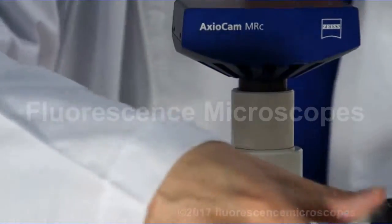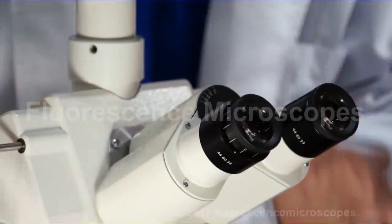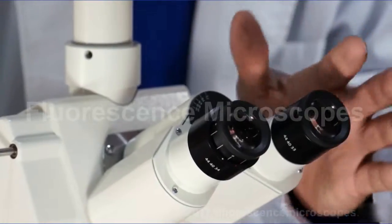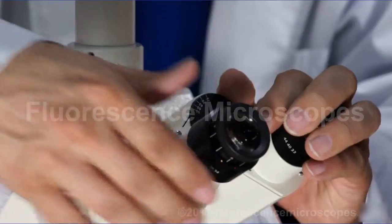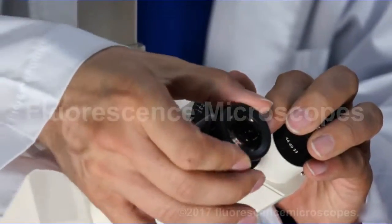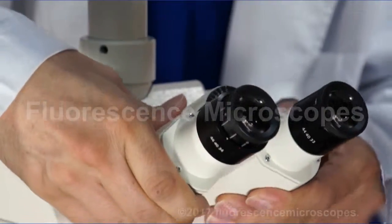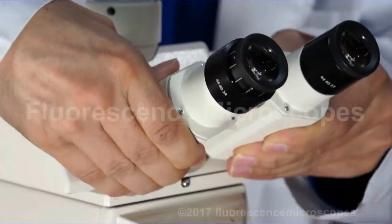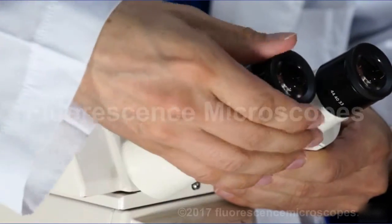It's got a diopter on one eyepiece. What you're going to want to do is focus using your focusing knobs, get one eye in focus, and then leave the focusing knobs alone and adjust this diopter so your other eye is in focus. It's also got an interpupillary distance, so you can adjust it for the distance between your eyes for your particular needs.